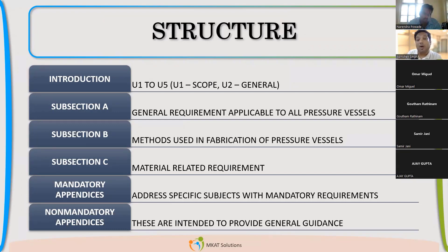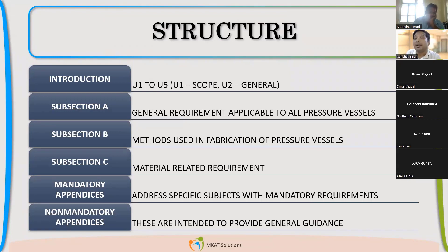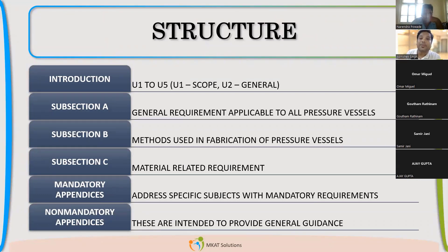Opposite to that, there are non-mandatory appendices that have procedures which are not mandatory for us to follow. If I have a certain different rule, I can follow that. But as a designer, if the code is giving something even as non-mandatory, it is effectively mandatory for us — because if I follow other rules, it will be really difficult to justify to the authority why I took a different procedure rather than the non-mandatory appendix suggested by the code. Also, there are very high chances that in the future, non-mandatory appendices will become mandatory.